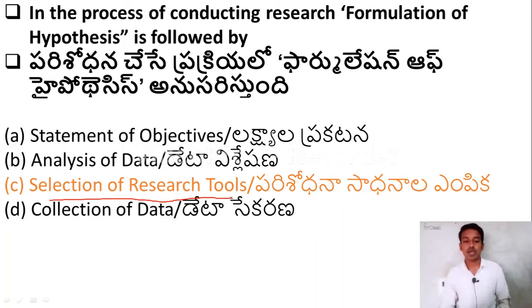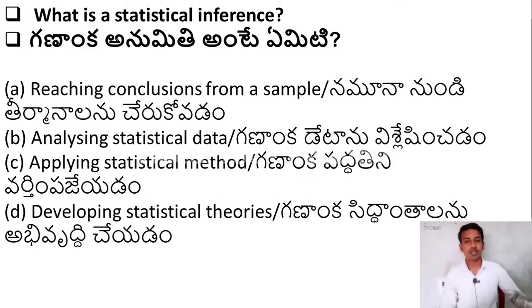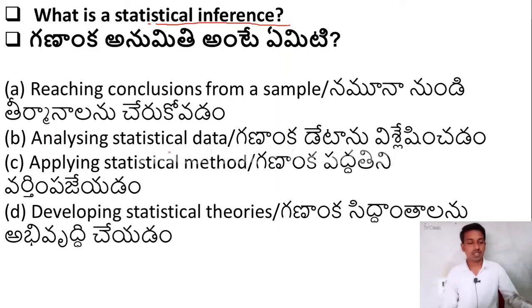I hope you will remember this answer. The next question is: what is statistical inference? Option A — reaching conclusions from a sample; Option B — analyzing statistical data; Option C — applying statistical methods; Option D — developing statistical theories.